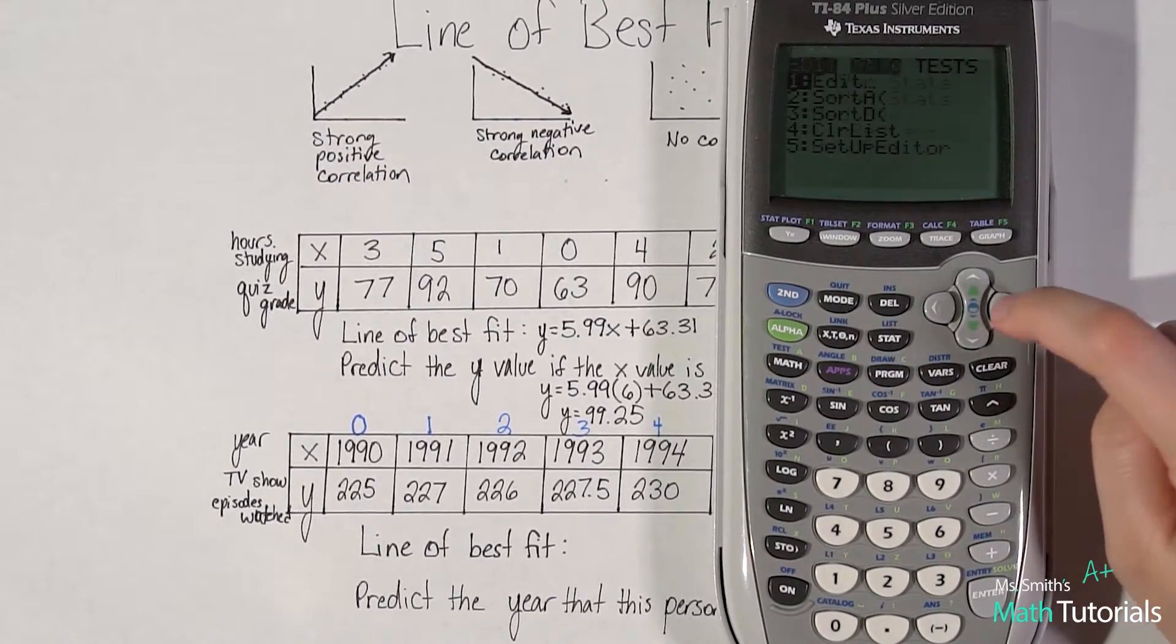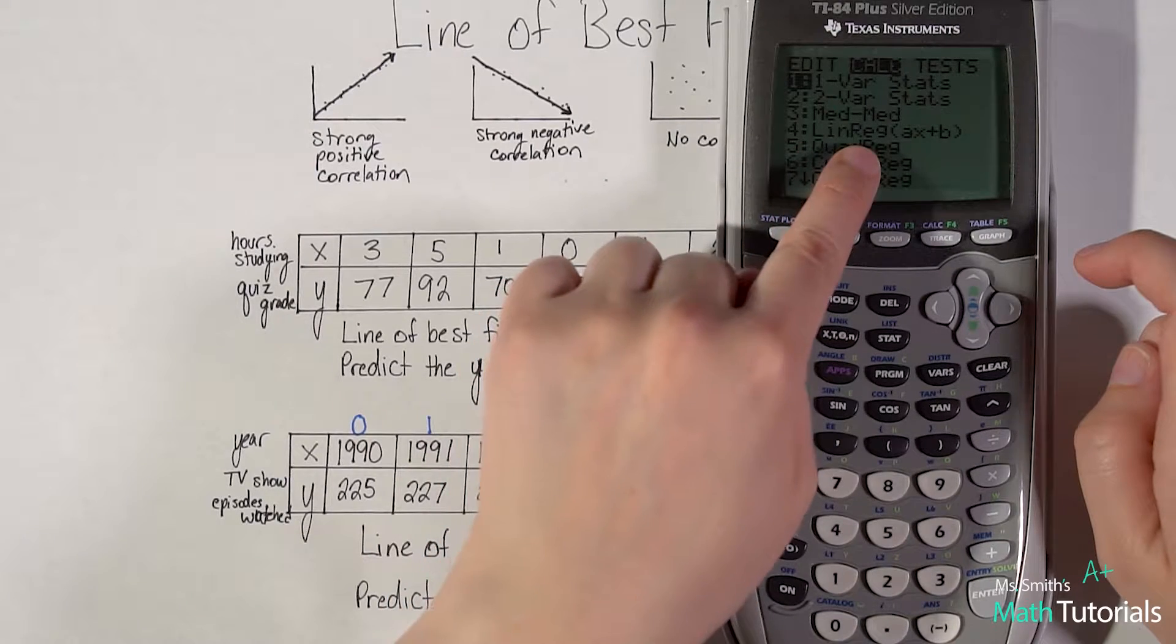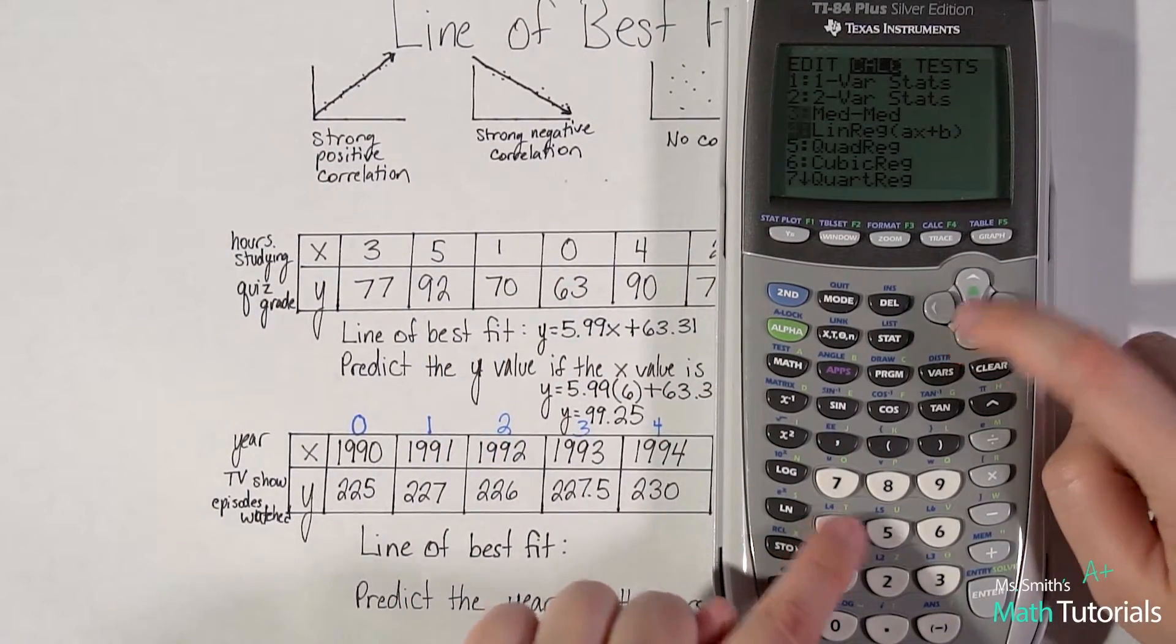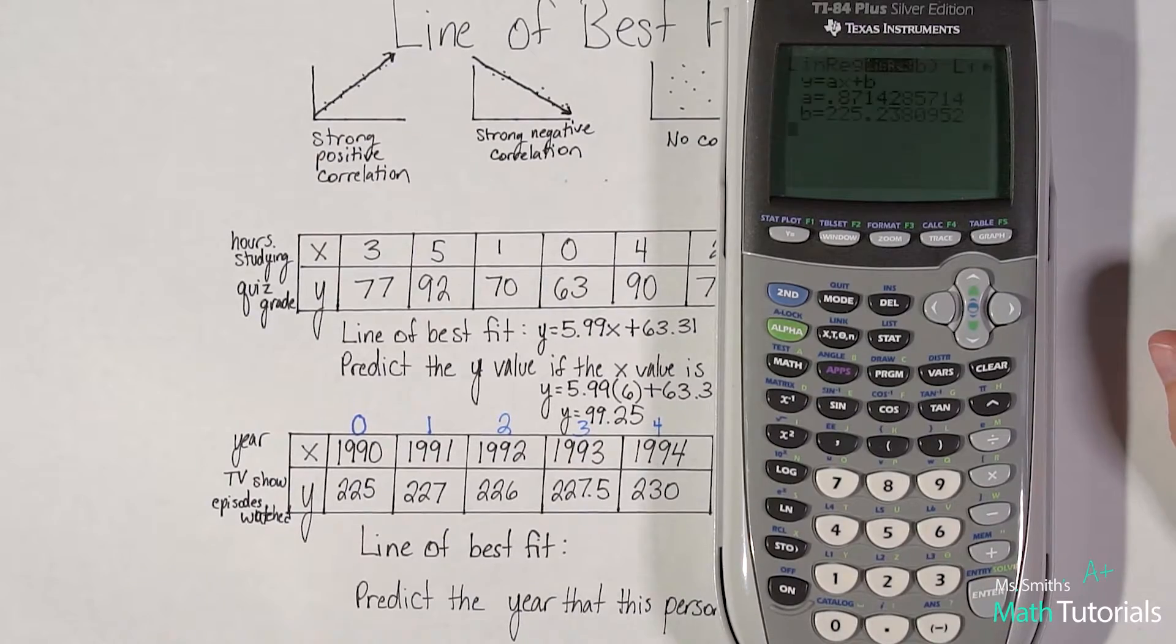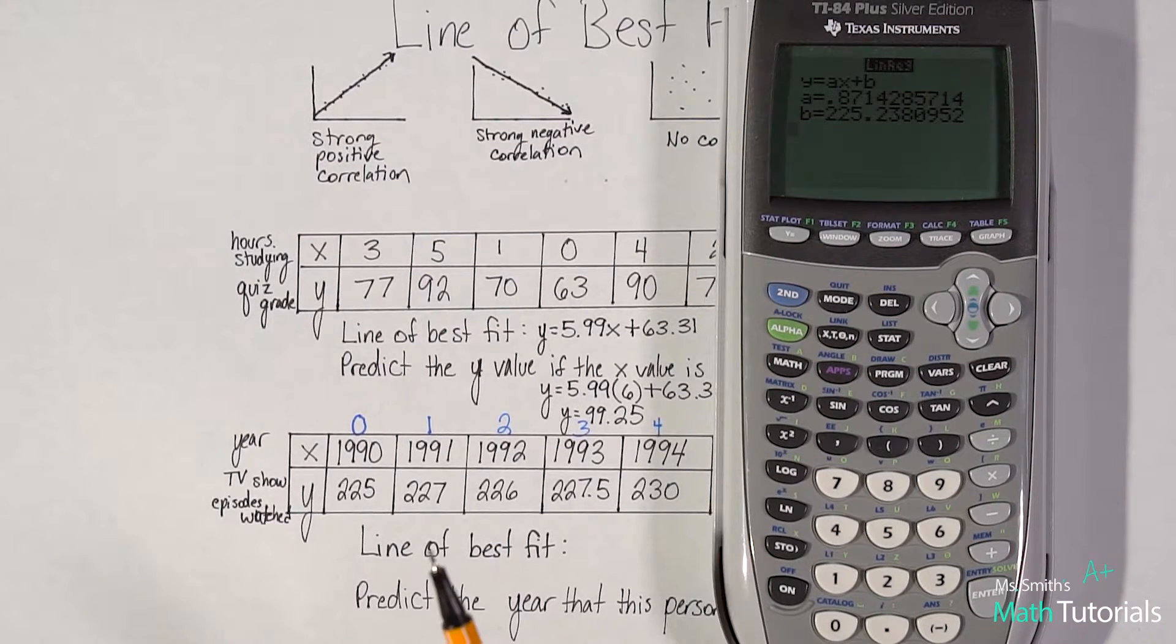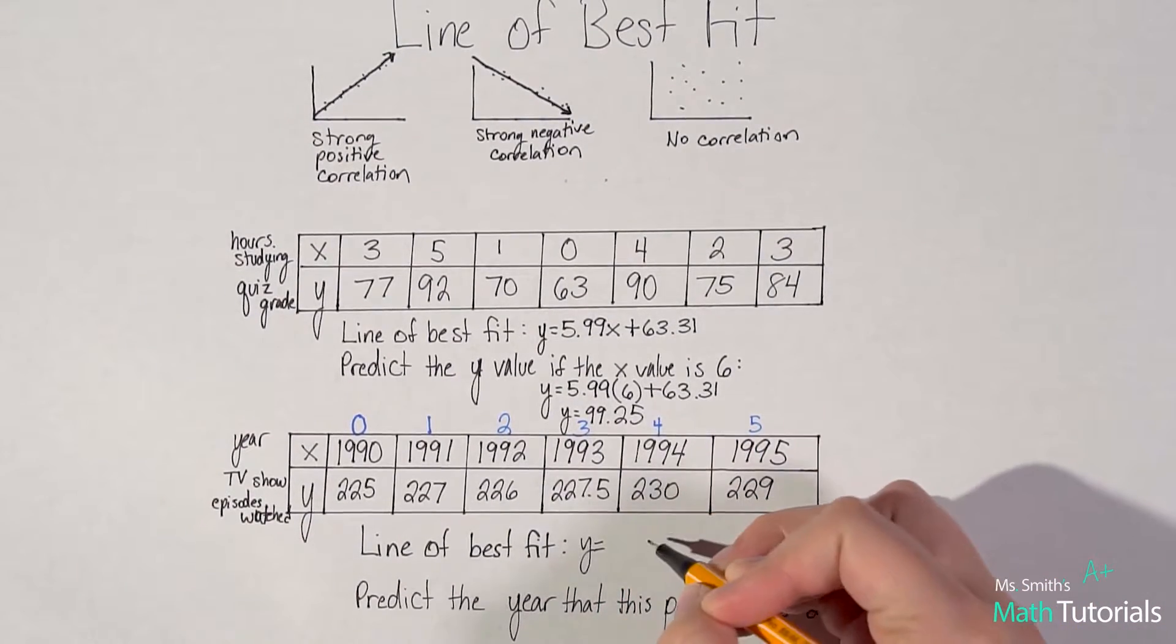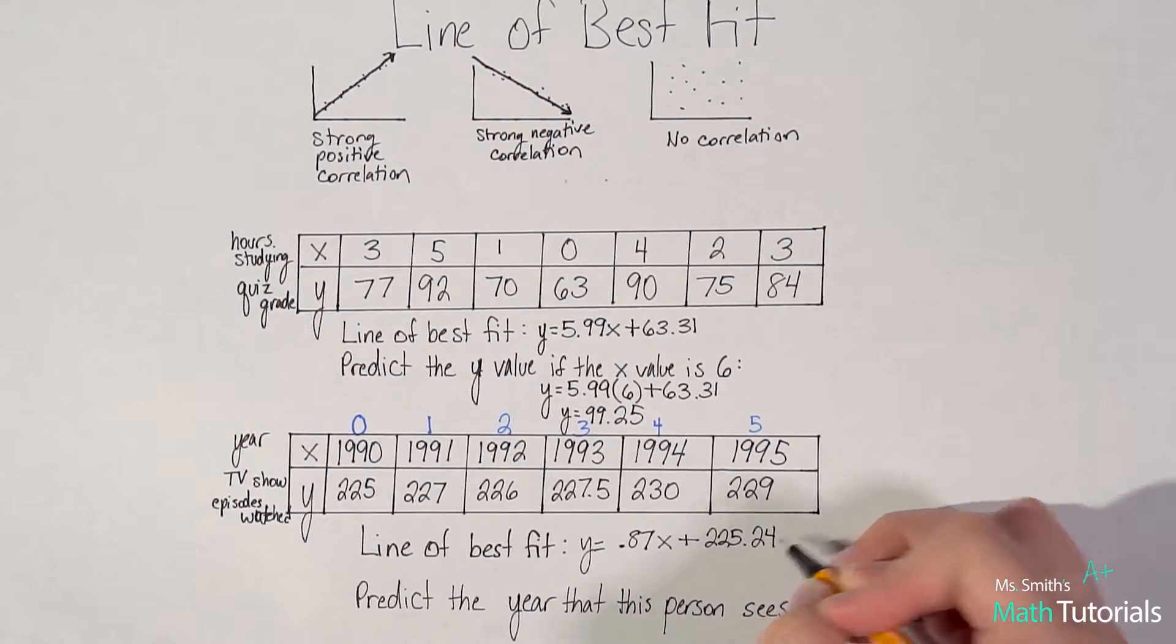I go to stat. I go to calc. And remember, any time they're wanting you to find line of best fit, it's a linear equation. So, you're going to use that linear regression, and you'll see it says ax plus b, which we say mx plus b. So that'd be four. Go down to four. Choose that. We want list one is our x value. List two is our y value. Sounds good. And there's our equation. So, a would be, let's round to the nearest hundredth, 0.87 and b would be 225.24. So, let's write that equation. y equals 0.87x plus 225.24.